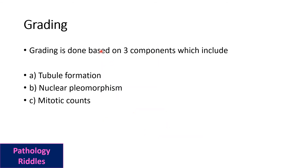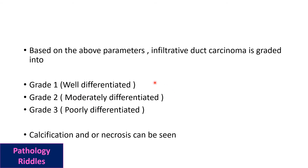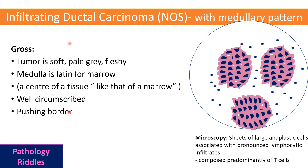The grading of breast carcinoma is done based on three components: tubule formation, nuclear pleomorphism, and mitotic count. Scores are given for each component, added up, and grading assigned: grade one is well differentiated, grade two is moderately differentiated, and grade three is poorly differentiated. Calcification and necrosis can also be seen in the tumor.